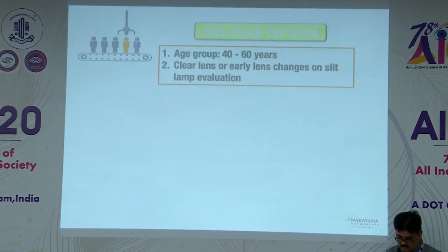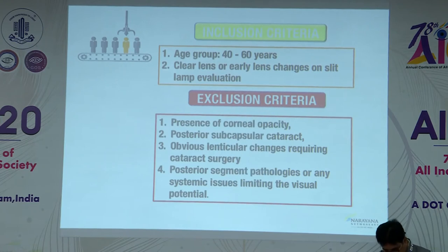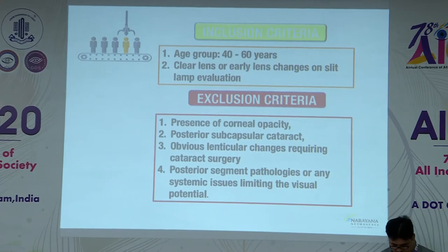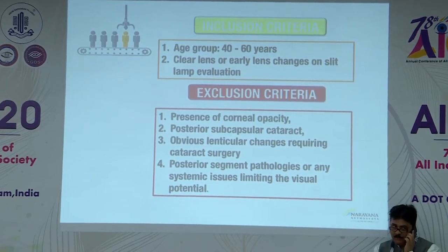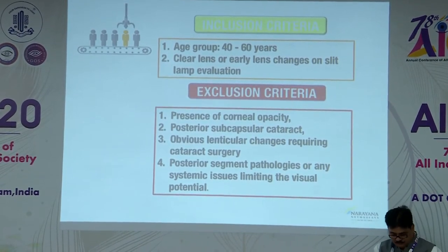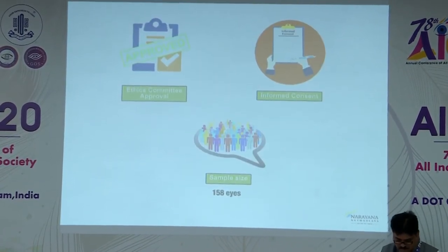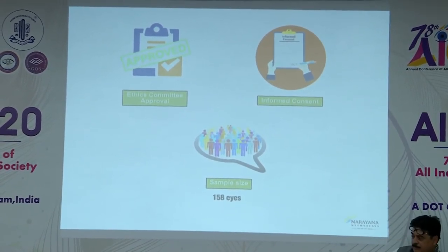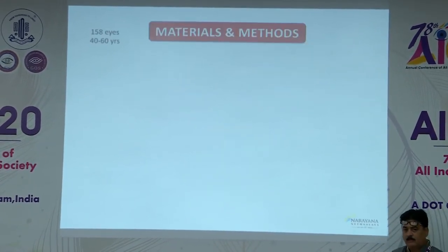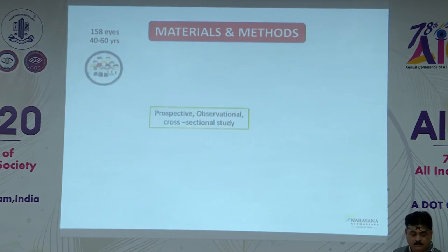Inclusion criteria included patients aged 40 to 60 years with clear lens or early lens changes on slit lamp evaluation. Exclusion criteria included corneal opacity, posterior subcapsular cataract, obvious lenticular changes requiring cataract surgery, posterior segment pathologies, or any systemic issues limiting visual potential. The study was approved by the ethics committee and informed consent was obtained from all patients. The sample size was 158 patients.